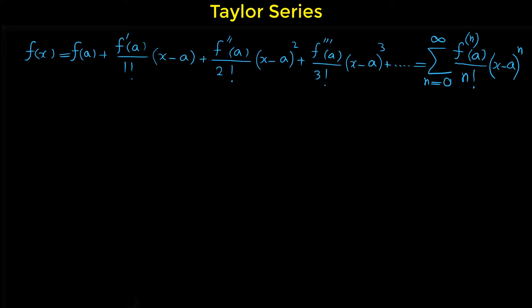As you can see, the Taylor series of a function is actually a power series that represents the function. For finding the power series of a function, you have to calculate the value of the function at the point a, the first derivative at the point a, the second derivative, the third derivative, and so on. So for finding the Taylor series we have to calculate the derivatives of the function.